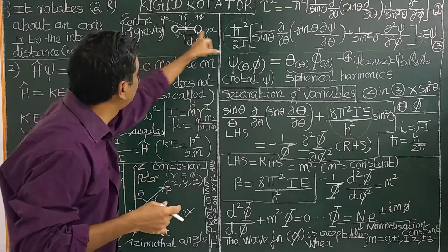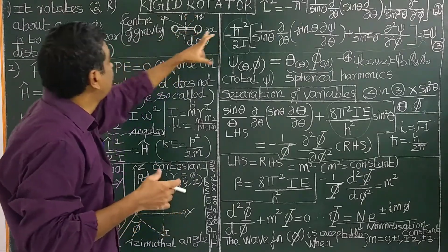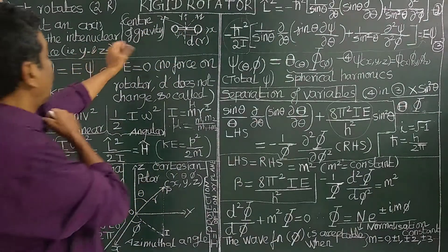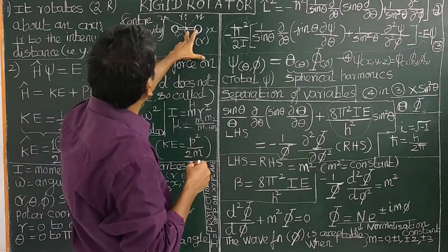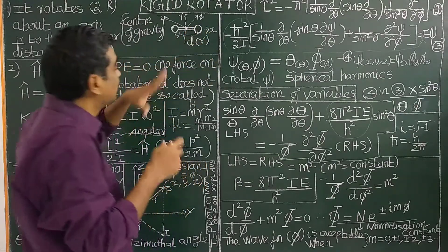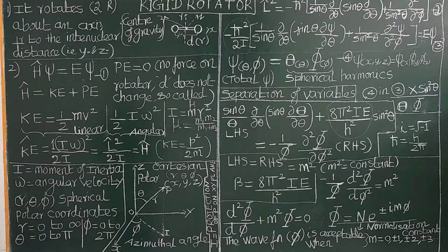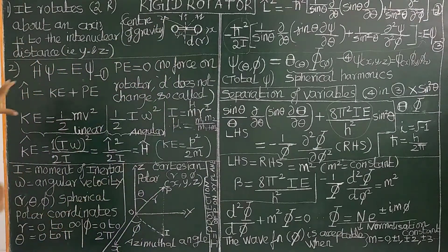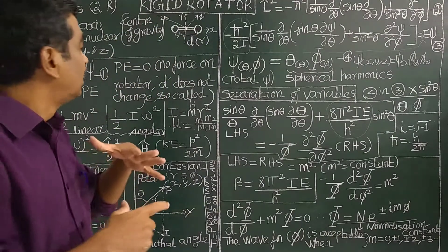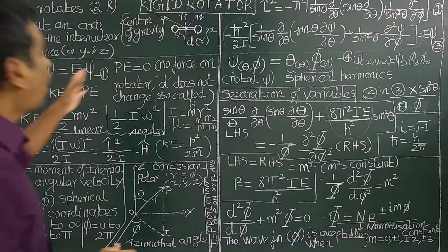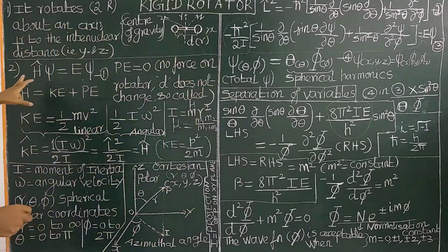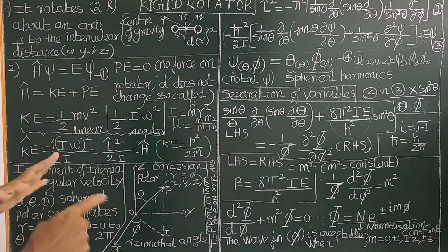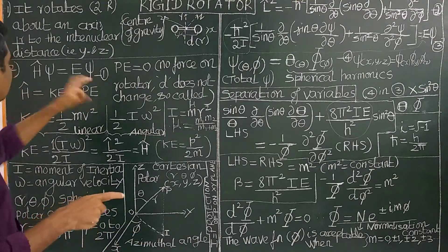There are two rotational degrees of freedom about an axis perpendicular to the internuclear axis, that is Y and the internuclear axis. The center of gravity of the molecule is at the center. Let us apply quantum mechanics to solve the rigid rotator problem. We write H-cap psi equal to E psi. This is one of the postulates of quantum mechanics — the eigenvalue equation.